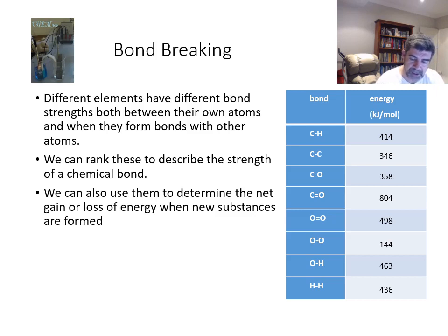The first thing we need to be aware of is that different elements have different bond strengths, both between their own atoms and when they form bonds with other atoms. You can see a table here on the right where we've got bonds between single bonds between carbon and hydrogen, carbon and carbon, carbon and oxygen, oxygen and hydrogen, hydrogen and hydrogen, and oxygen and oxygen, and also a couple of double bonds between carbon and oxygen, and oxygen and oxygen. We can therefore rank different types of bonds on the basis of their strength. We can also use these to determine whether there is a net gain or loss in energy when new substances are formed.